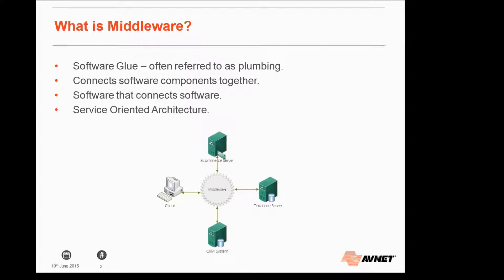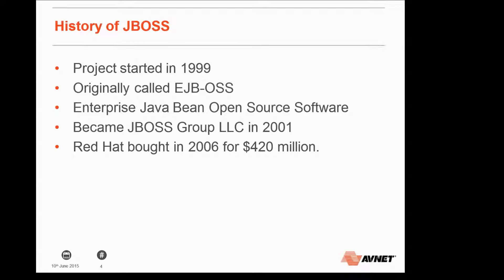A bit about JBoss itself as a community project: it was started in 1999 by Mark Fleury. Originally called EJBOSS — Enterprise Java Being Open Source Software — it was later abbreviated to JBoss and became the JBoss Group LLC in 2001. Red Hat came along in 2006 and bought it for $420 million. Around the same time Oracle tried to buy it for around $400 million, but Red Hat won.